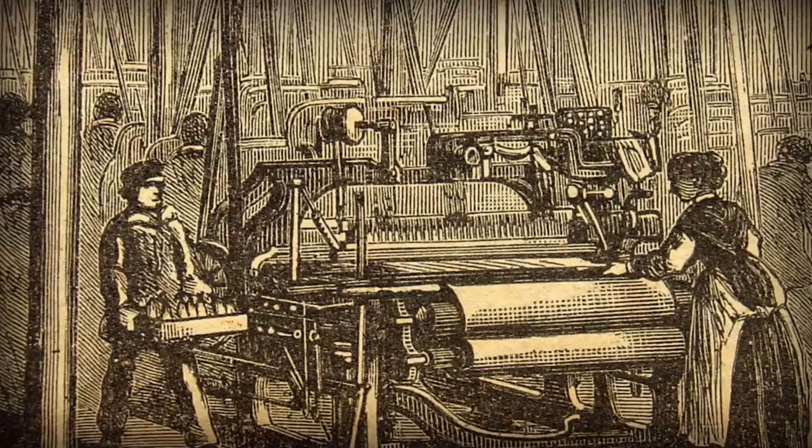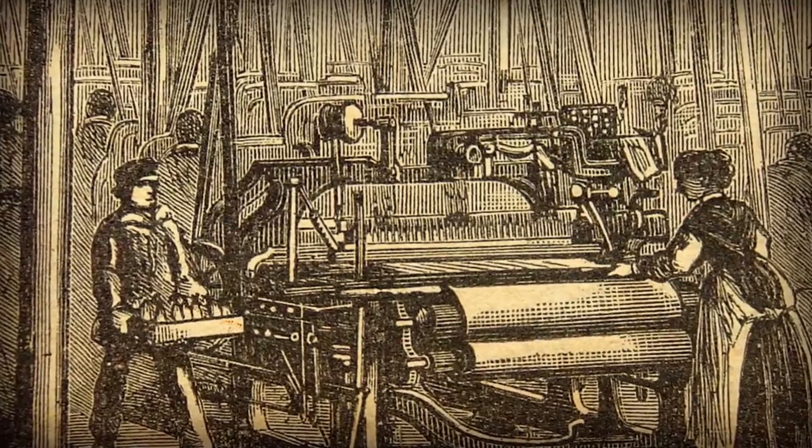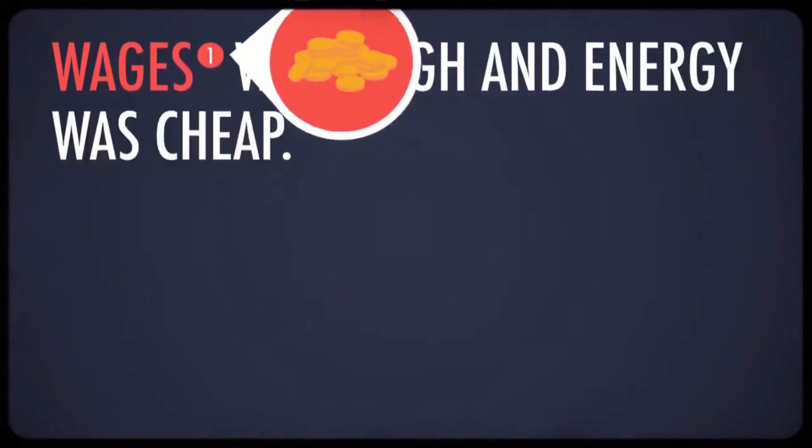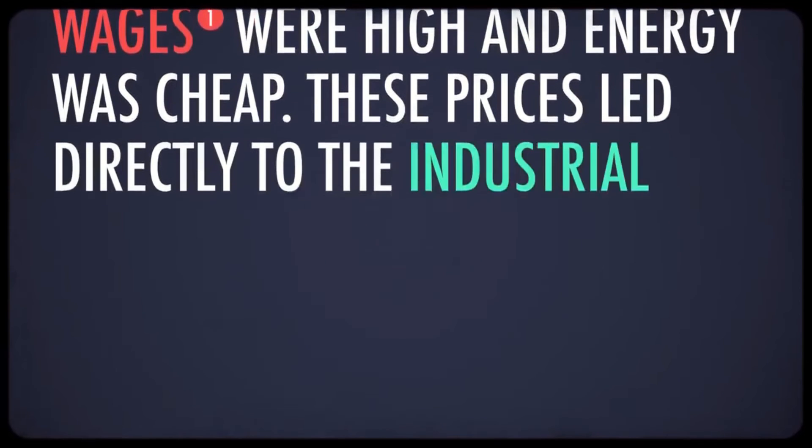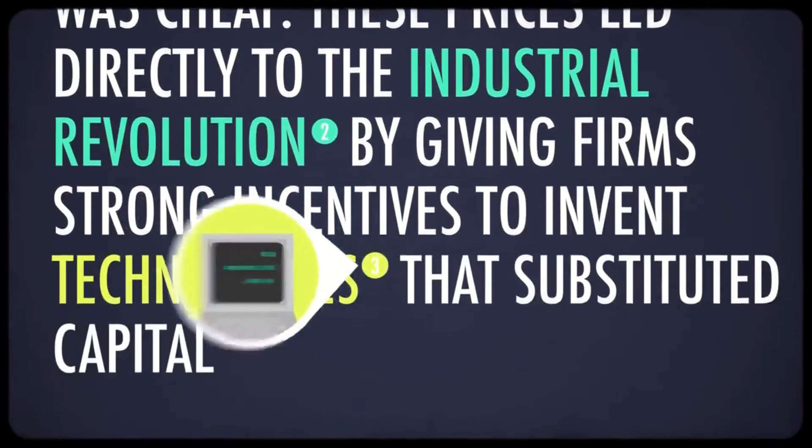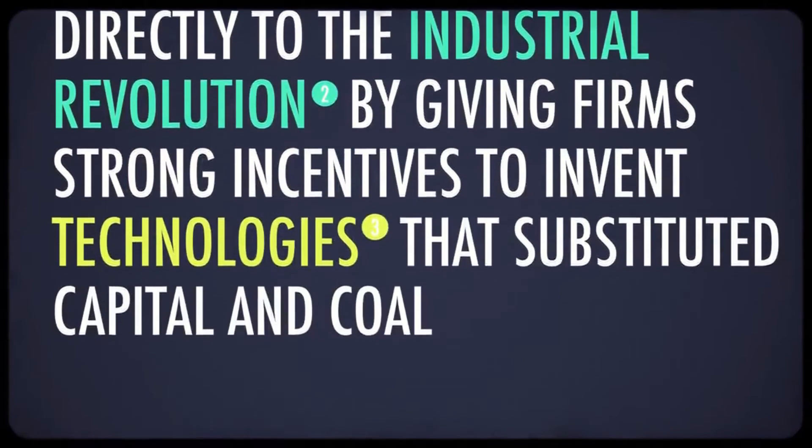Mainly, high wages combined with cheap fuel costs meant that it was economically efficient for manufacturers to look to machines as a way of lowering their production costs. To quote the historian Robert Allen, wages were high and energy was cheap. These prices led directly to the Industrial Revolution by giving firms strong incentives to invent technologies that substituted capital and coal for labor.